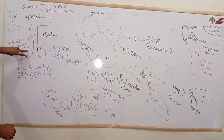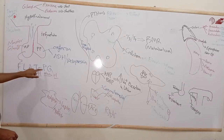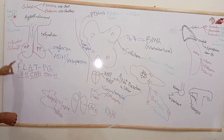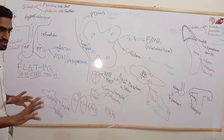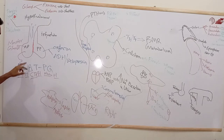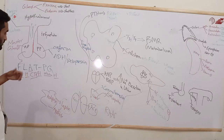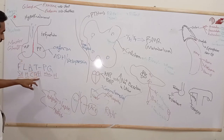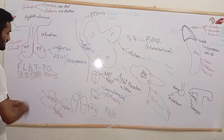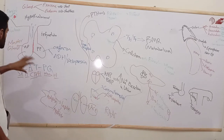The anterior pituitary is a master gland because it controls the secretion of other glands. A shortcut to memorize its hormones is 'FLAT PG': FSH (follicle stimulating hormone), LH (luteinizing hormone), ACTH (adrenocorticotropic hormone), TSH (thyroid stimulating hormone), Prolactin, and Growth hormone.